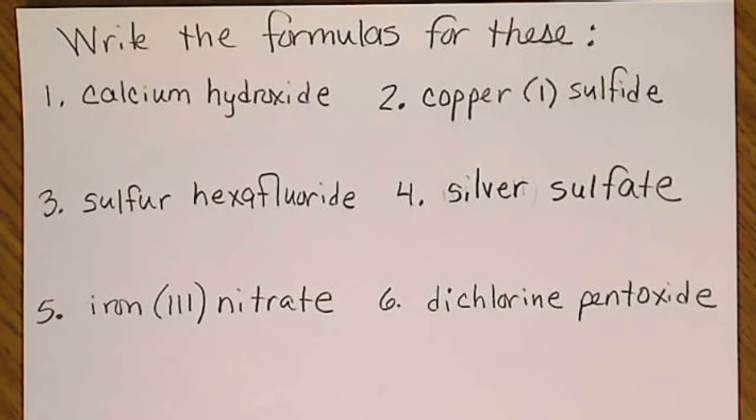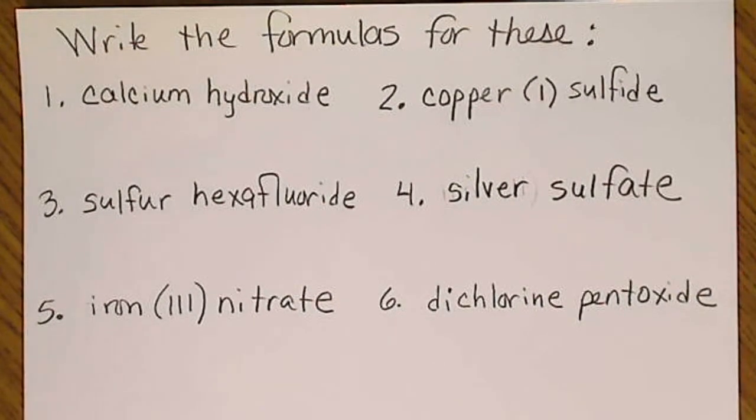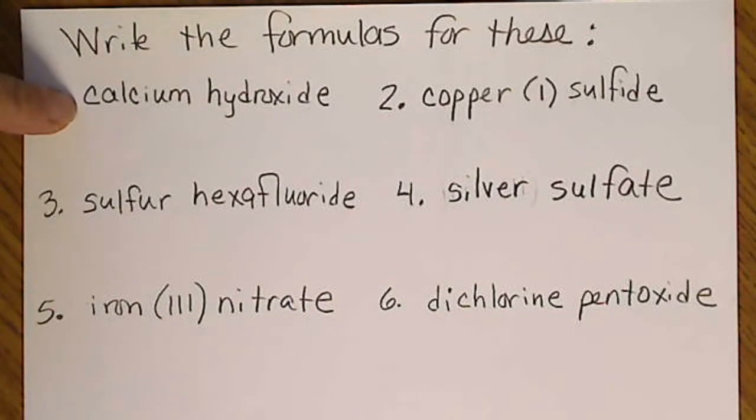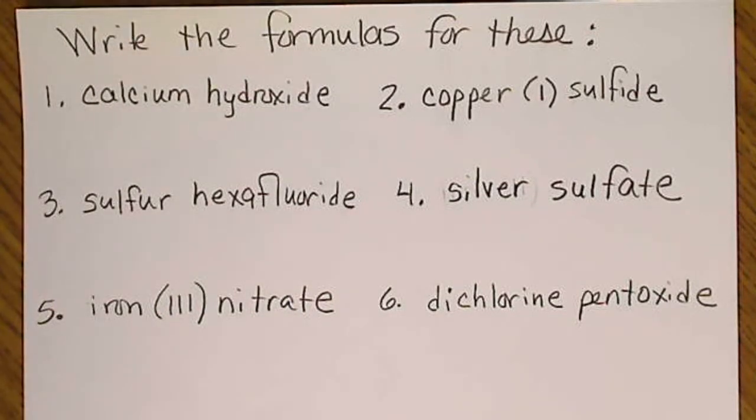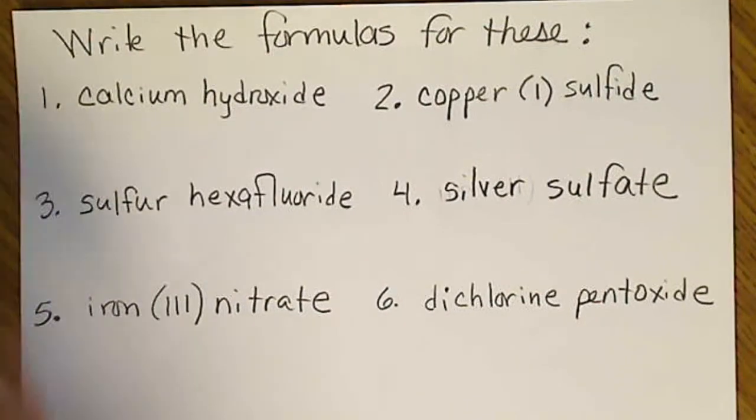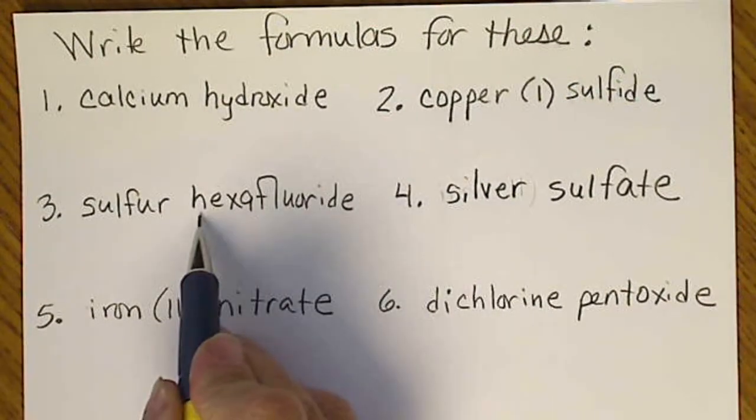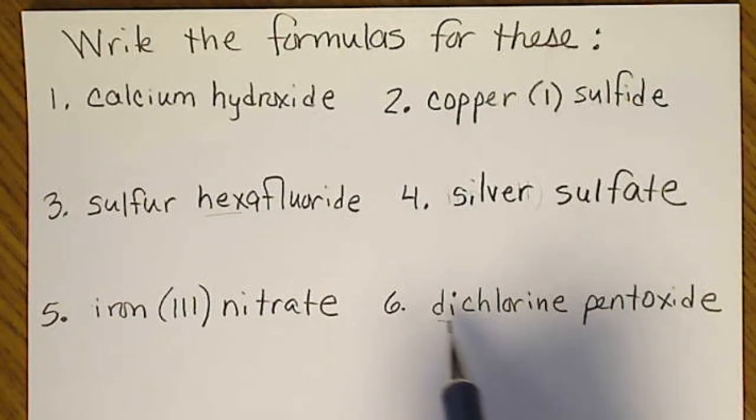We're going to write the correct formula from the names. If we have a metal in the name, we're going to need to look at the periodic table to figure out the charges, and from the charges will come up with the formula because the charges have to cancel to zero.